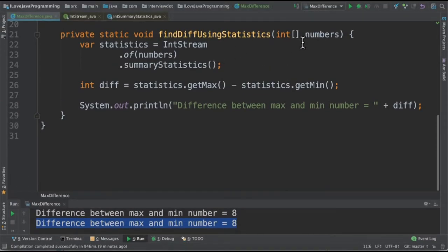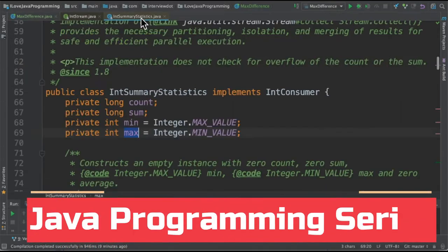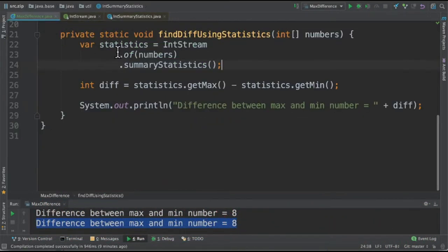In the second method I'm going to take this numbers array and convert into a stream and call a new method called summary statistics. It provides multiple results. One of them is minimum and maximum. So we can use the statistics to get the maximum value and the minimum value.